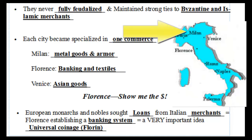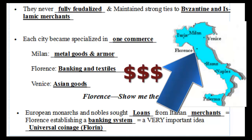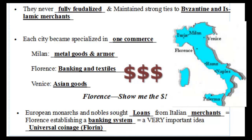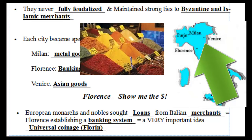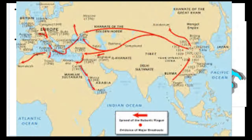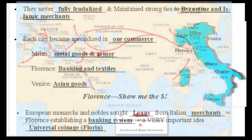Milan, which you'll see on the map, is going to focus largely on metallurgy — the creation of metal goods and armor. Documents show that if you were uber rich, like a king, and you wanted the best armor custom-made, you'd get it from Milan. Florence is going to become known for banking and textiles. Venice becomes the entry point for Asian goods getting into Europe. You can thank these three cities for the Black Plague as it spreads throughout Europe, because this is where it enters.